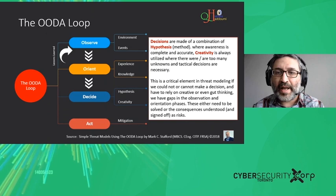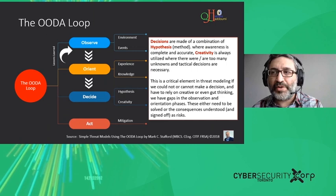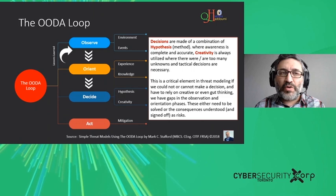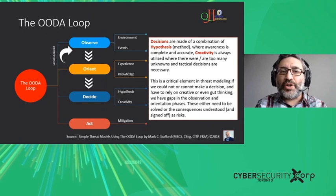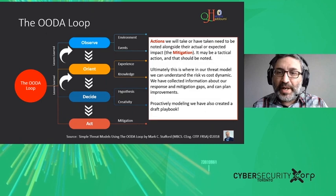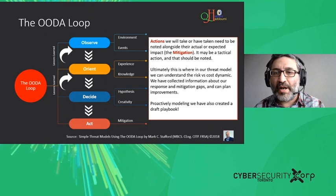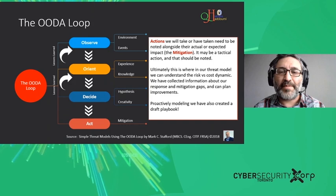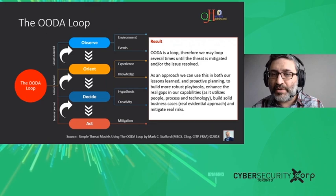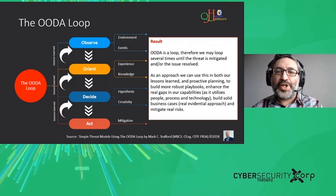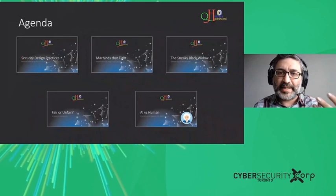Then we Decide — made of two things: a hypothesis about why something is happening, and creativity if we encounter new tactics. Then we Act, which also contains mitigation. The OODA loop should go several times, sometimes within the same incident. We fail at the first loop, go again and again, and use information learned from previous loops in new events. These are the basic framework concepts we use in cybersecurity.